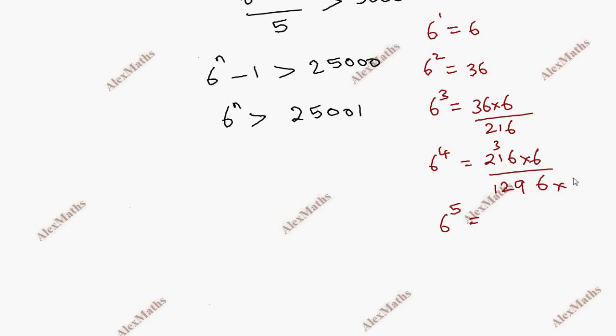This is 6 power 5, so 1296 times 6 equals 7776.